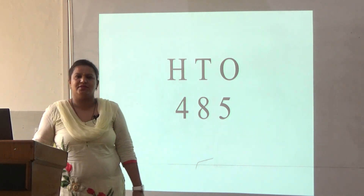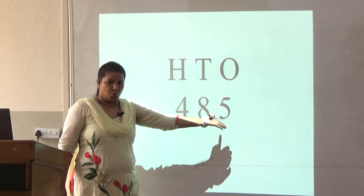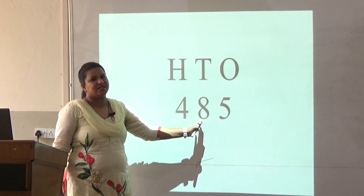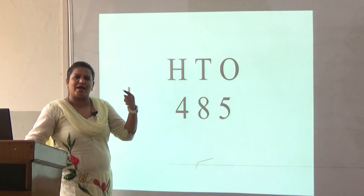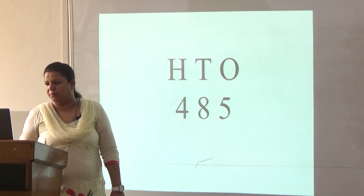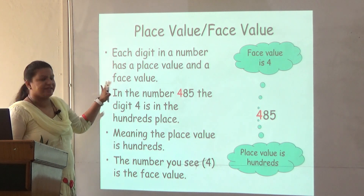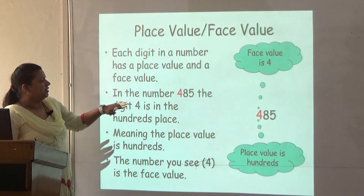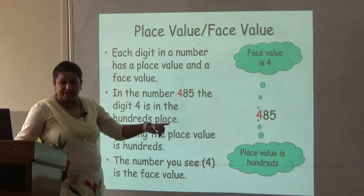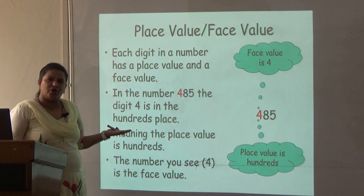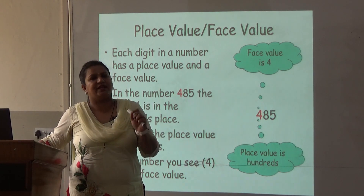Can you read this number? This is 485. 5 is at which place? 1's place. 8 is at 10's place and 4 is at 100's place. Let us recap the face value and the place value of the given number. Each digit in a number has a place value and a face value. In this number 485, the digit 4 is at 100's place. So what is the place value of 4? 400. And what is the face value of 4? The number itself, that is 4.